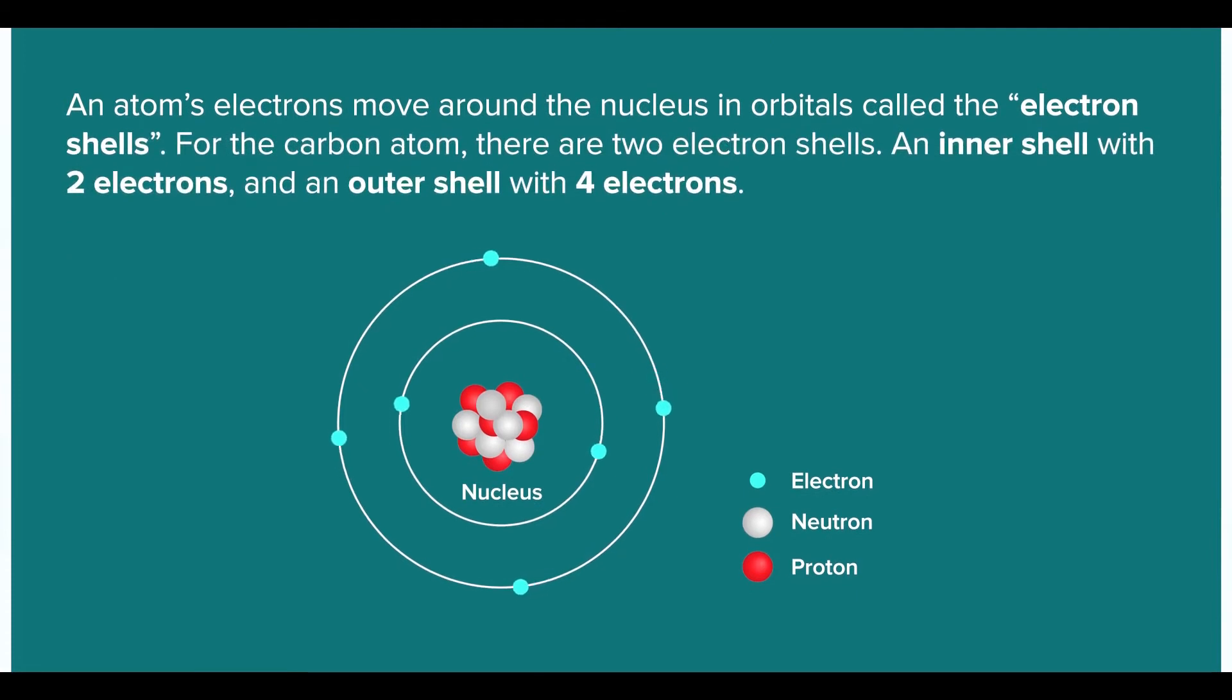An atom's electrons move around the nucleus in orbitals called the electron shells. For the carbon atom here, there are two electron shells, an inner shell with two electrons and an outer shell with four electrons.